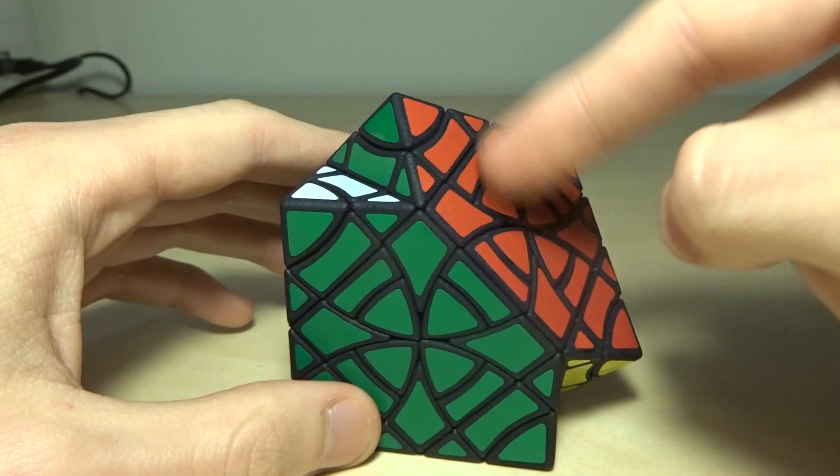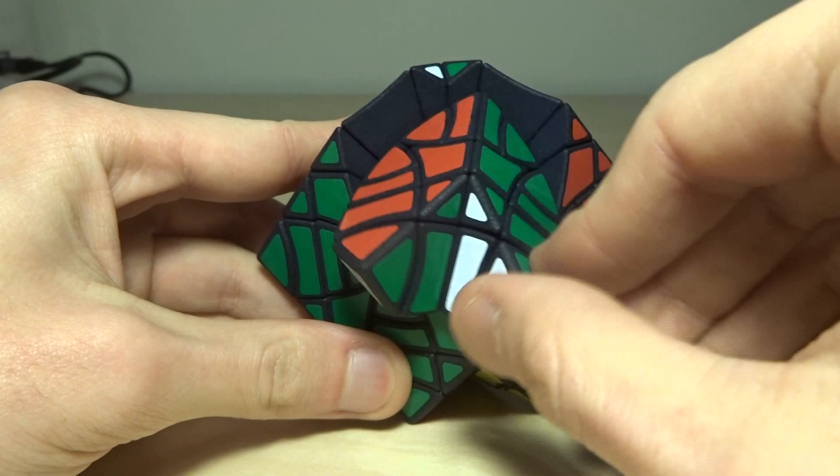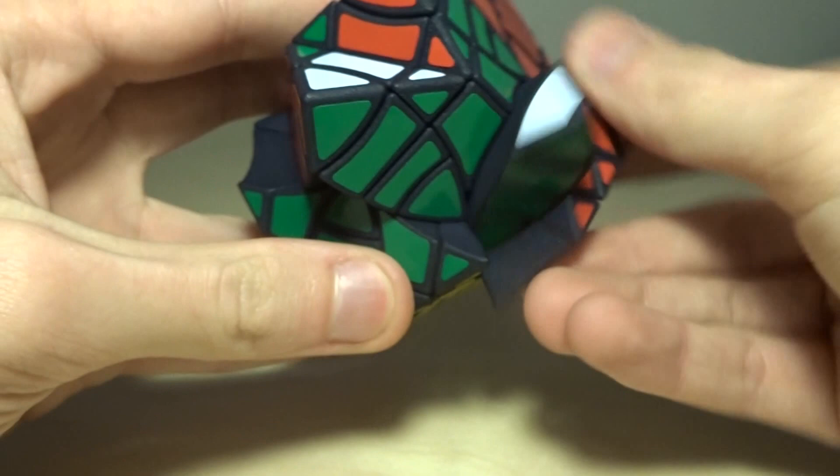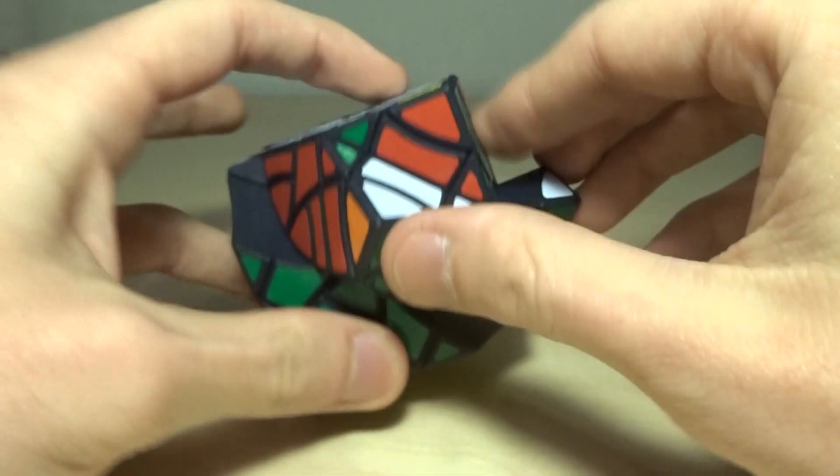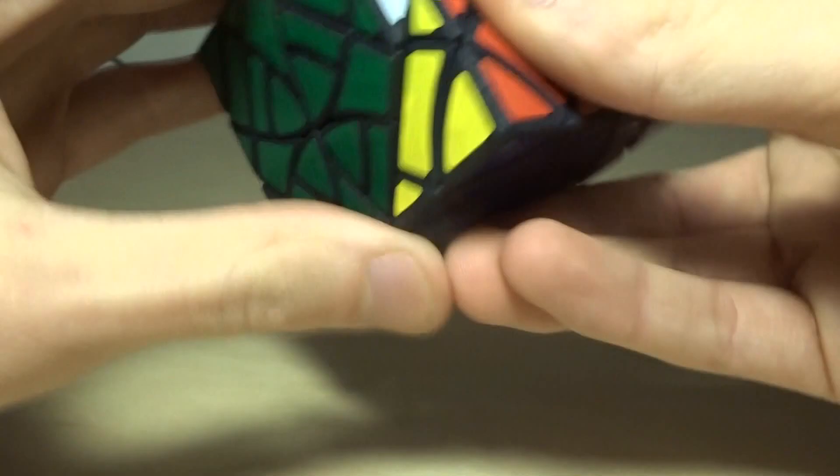But you can actually do a halfway SCUBY turn, or a 60 degree turn. And you have these trapezia over here, which you can then use to keep turning the cube and produce very different jumbling moves to the normal Curvy Copter. And you can just keep jumbling just as you would normally. Let me see if I can get this back again. There we go.